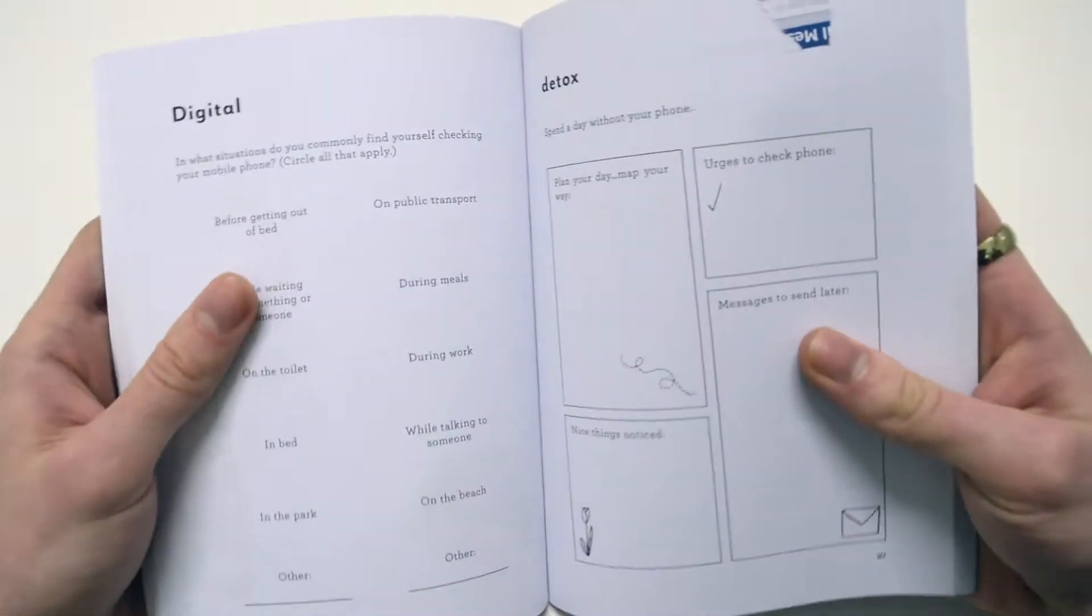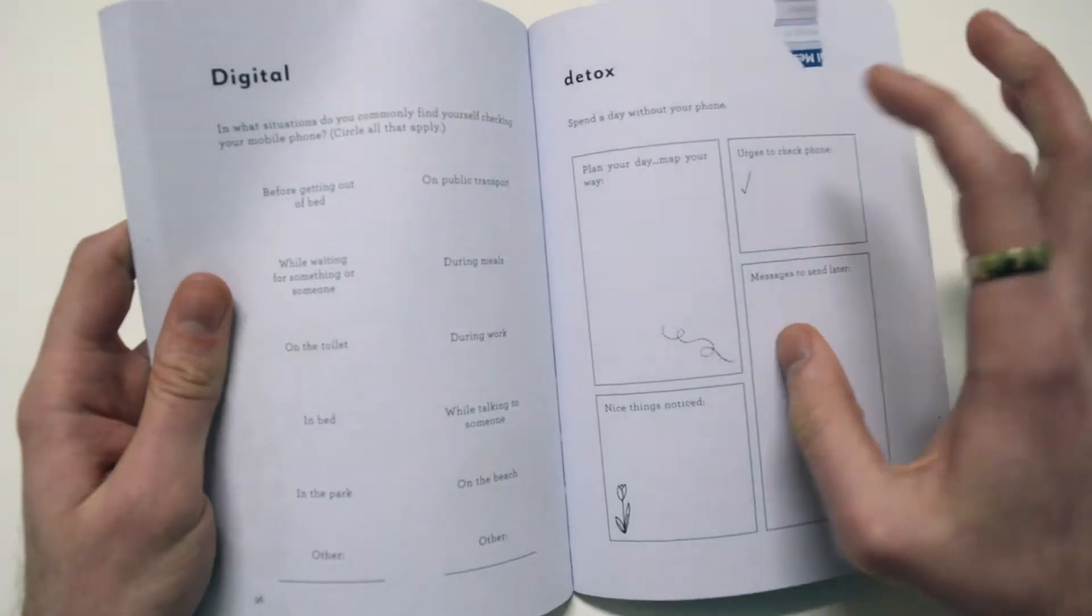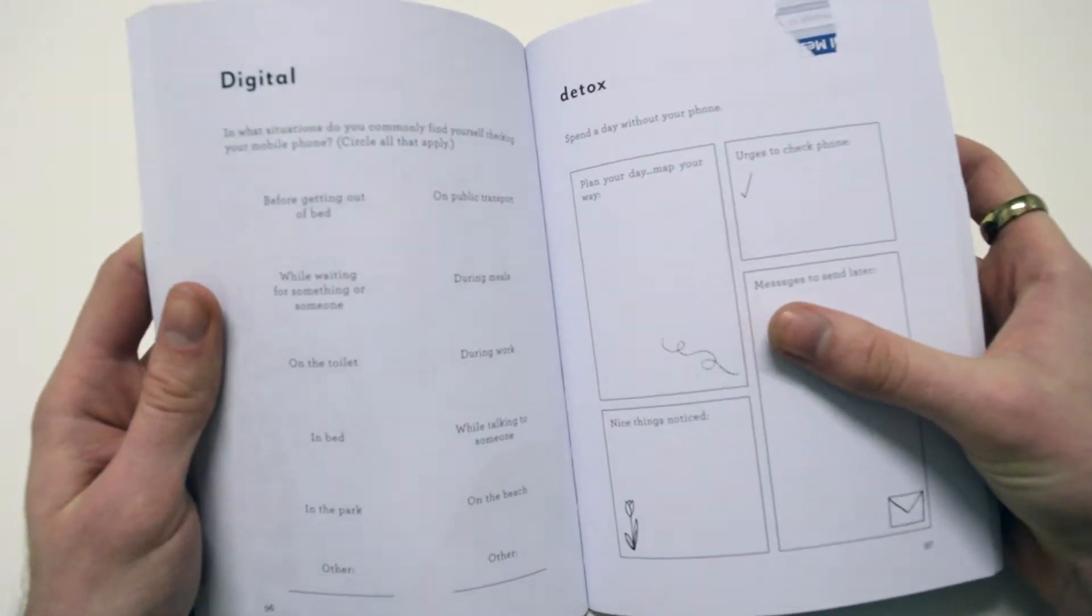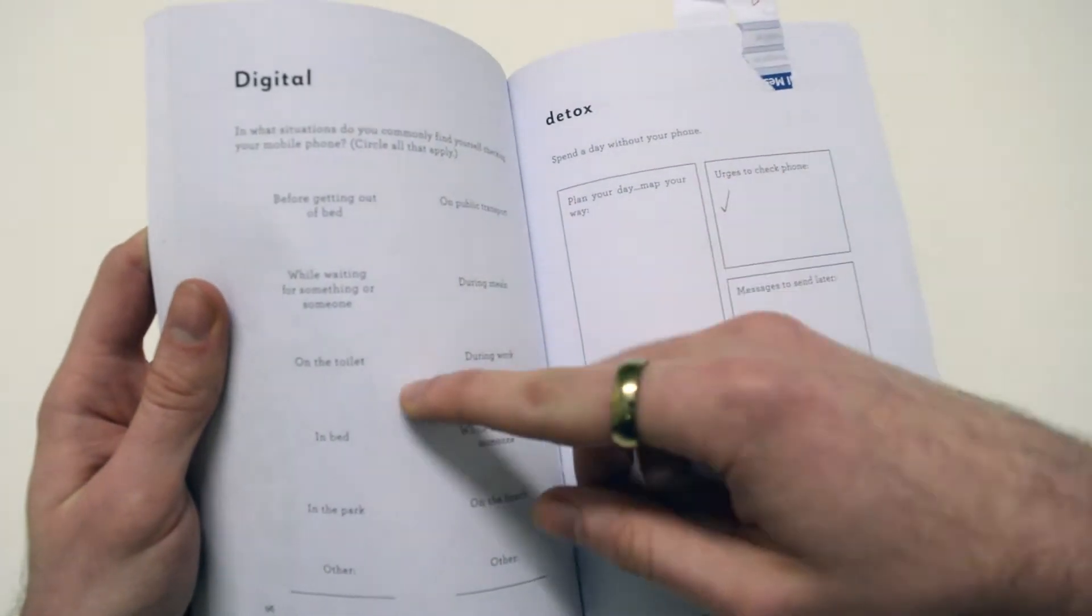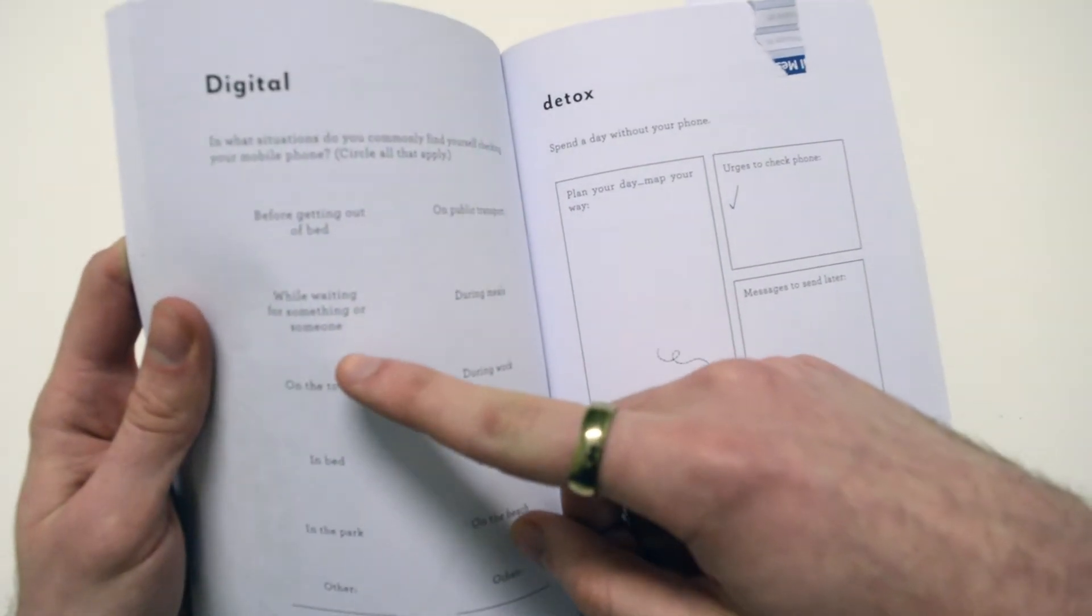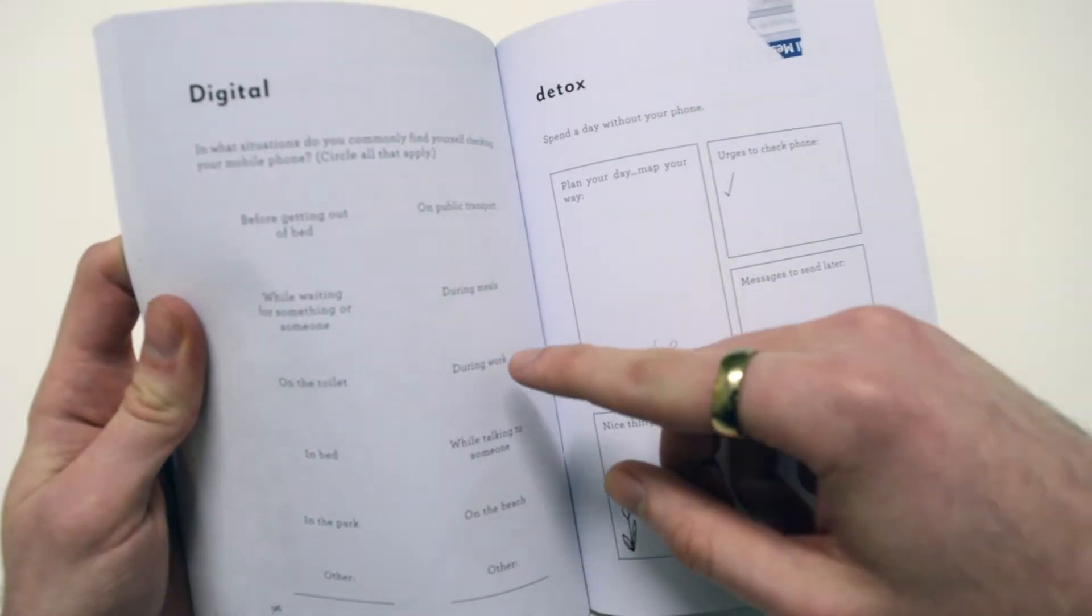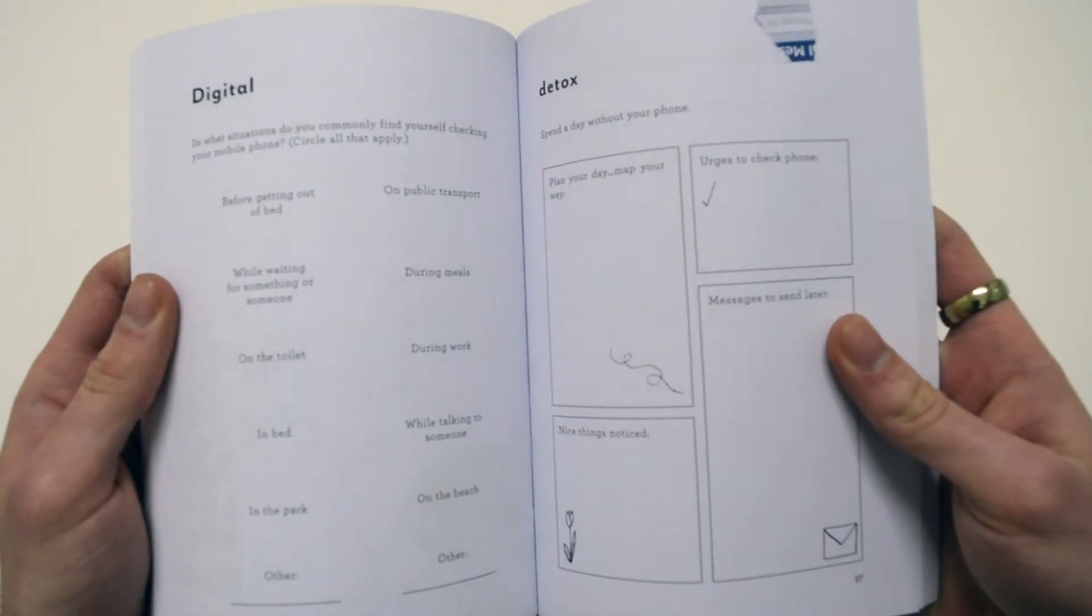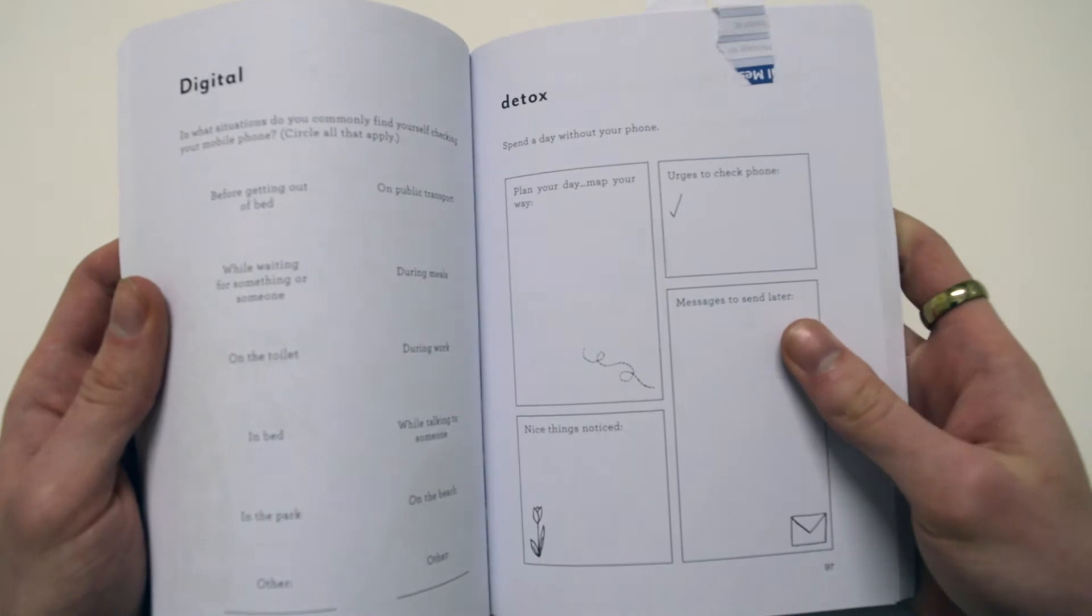One half of the page asks what situations do you find yourself checking your phone, and you circle all the times when you do, like while waiting for someone or something. It really brings attention to all those times when you use your phone as a getaway just because you're bored or just reflexive muscle memory kind of thing.